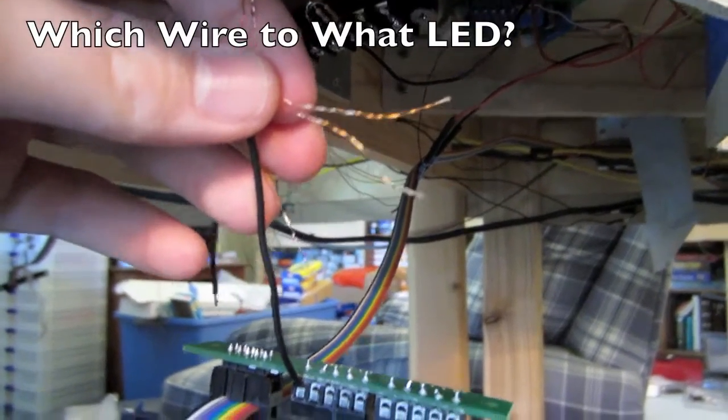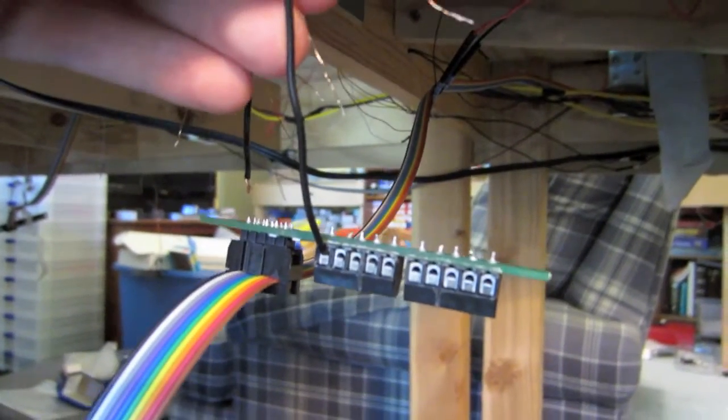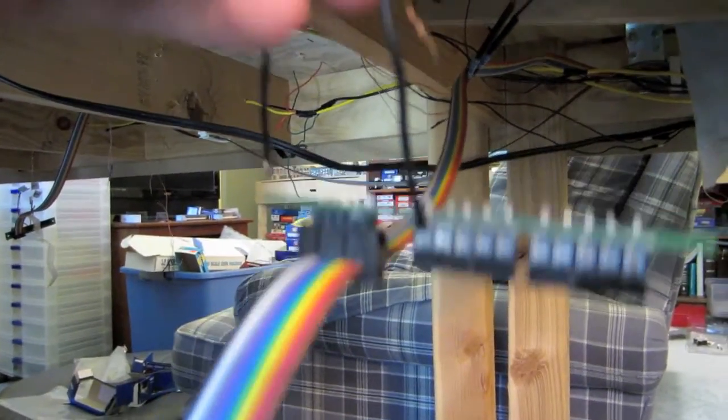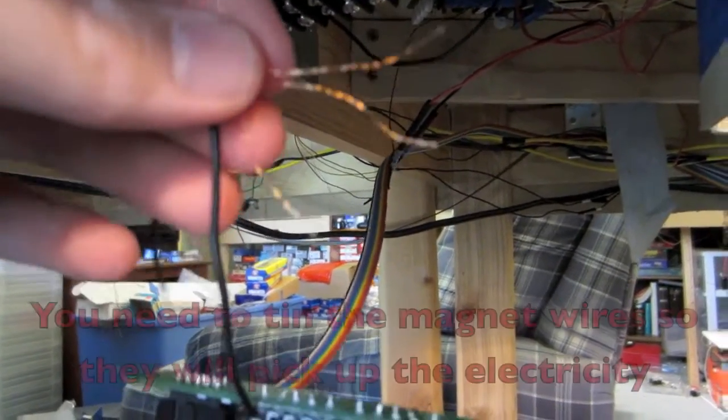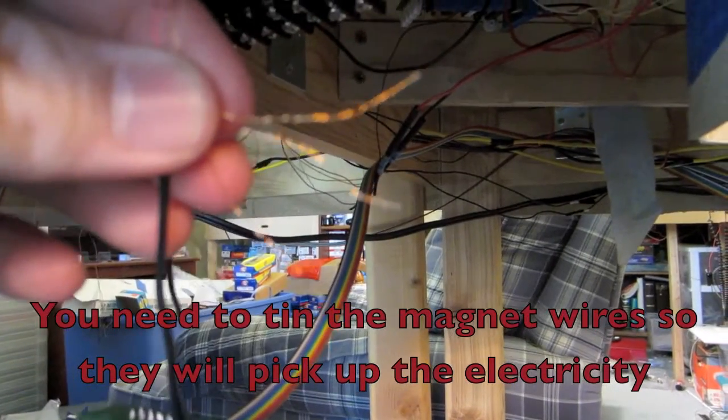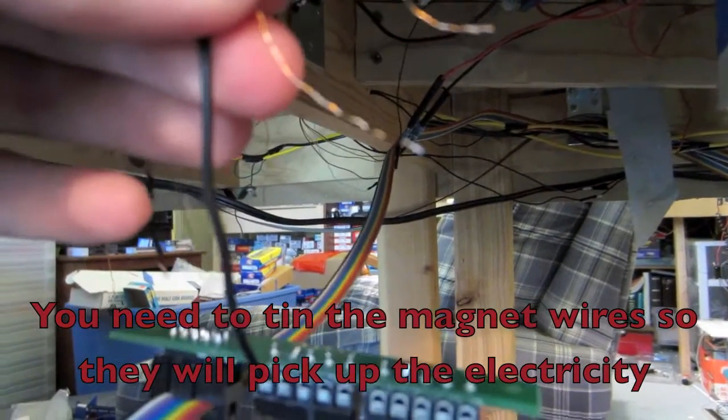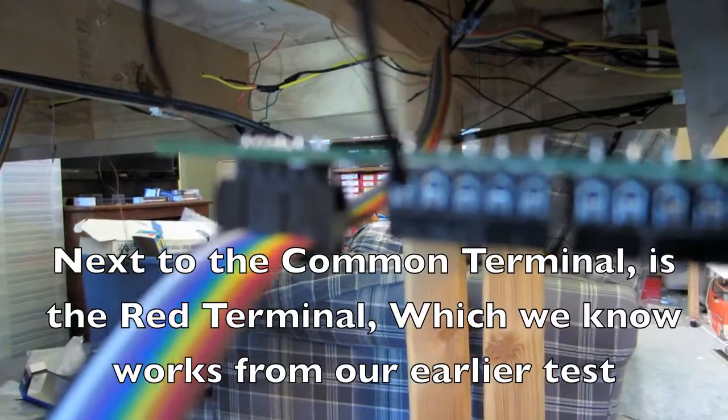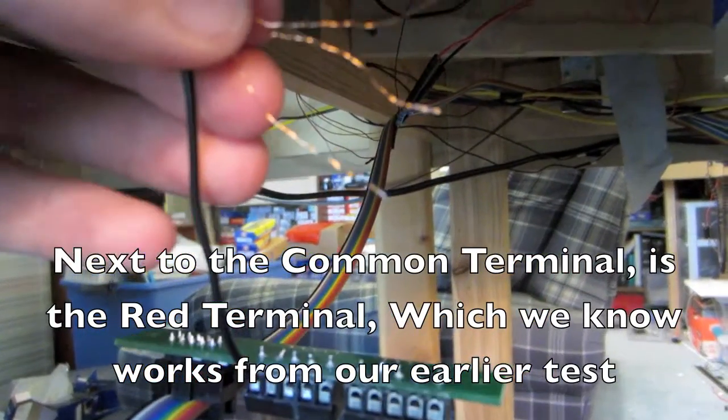The way I test the LEDs is with the common already screwed in. I know that the red terminal, which is the one closest to the common, is going to be getting power right now. So what I'm going to do is put each one of these wires, after they've been tinned, into this slot next to the common, and I'll see what lights up.